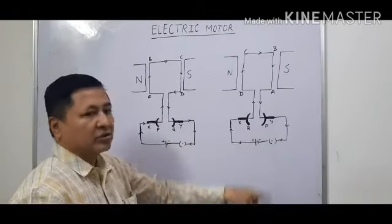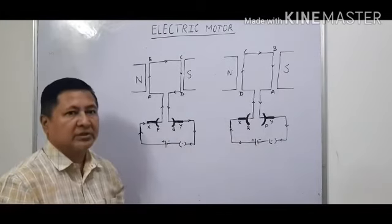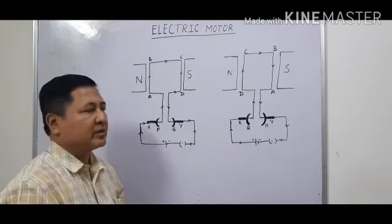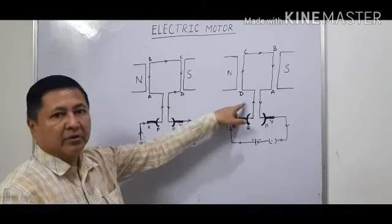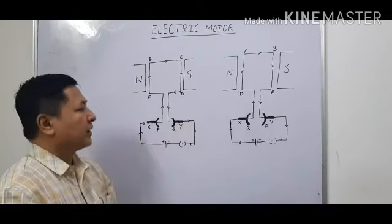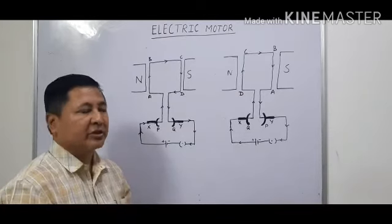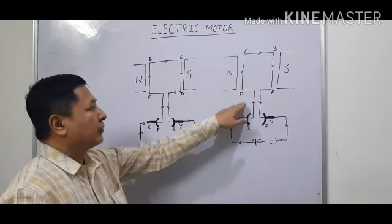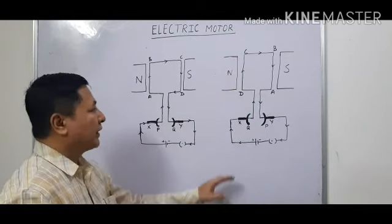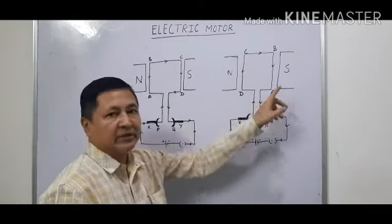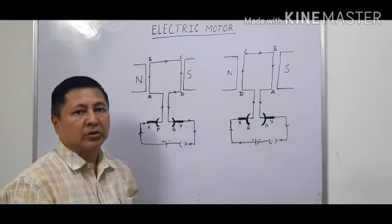Now we will see what factors increase the strength of the motor. First is the number of turns in the armature. Second is the amount of current — if more current flows through it, the strength of the motor will increase. And also the strength of the magnet being used. So these are the factors on which the strength of the motor depends.